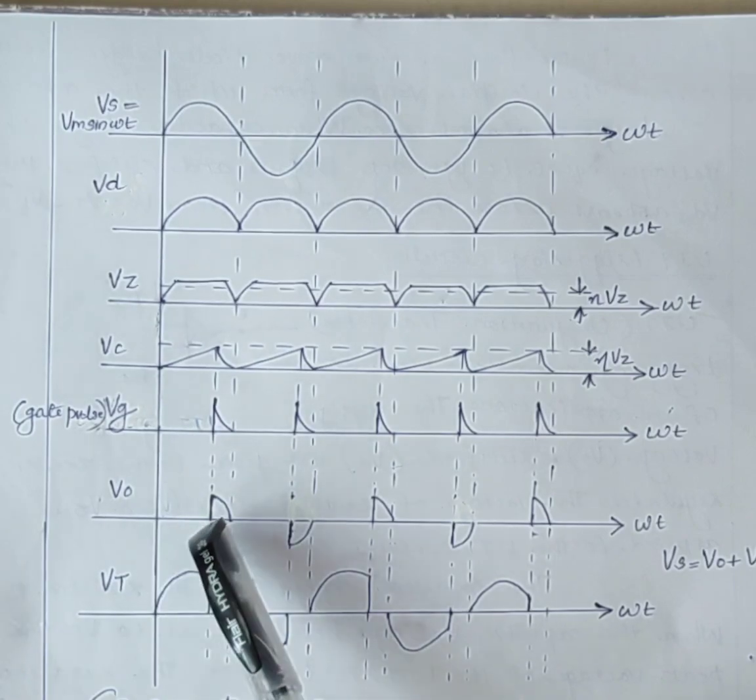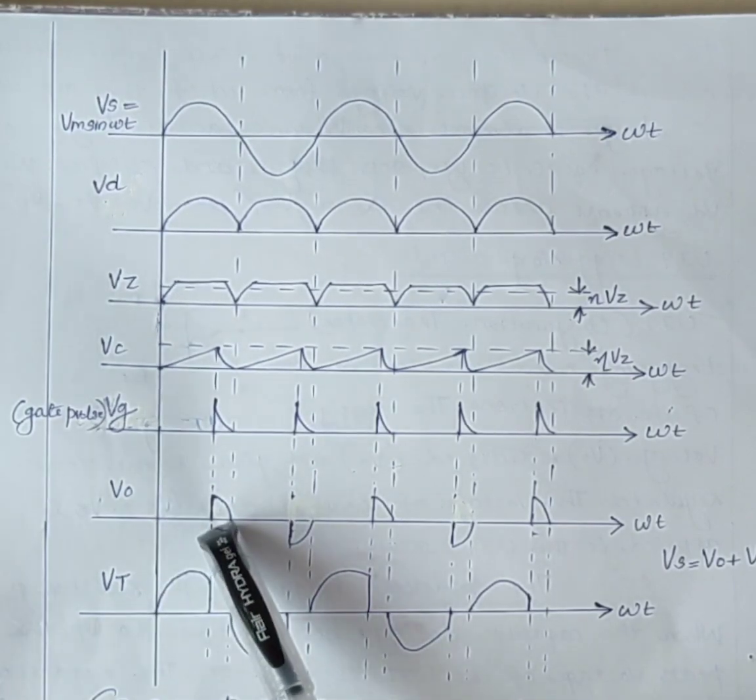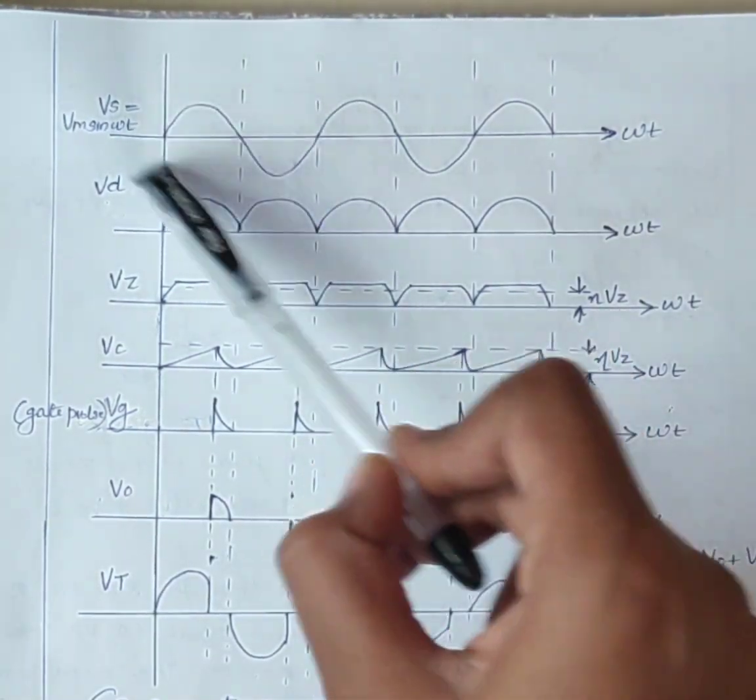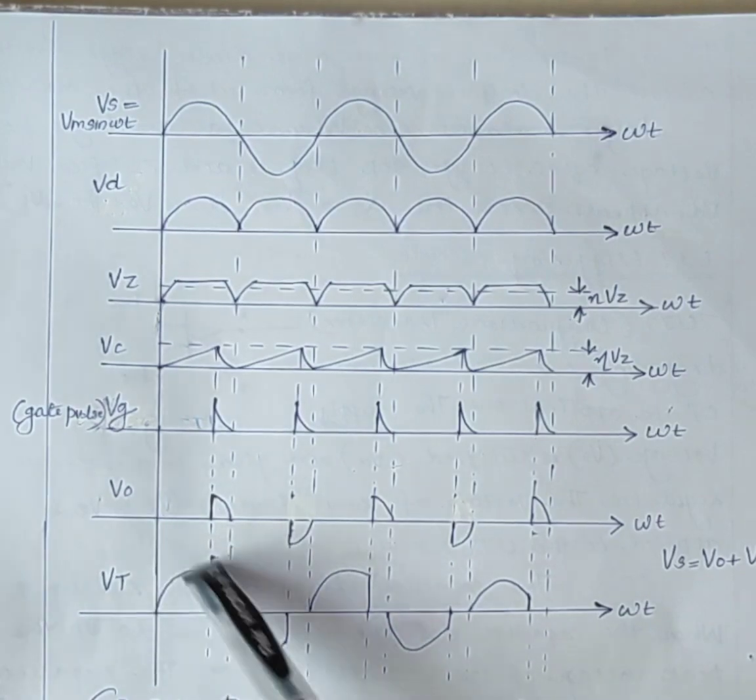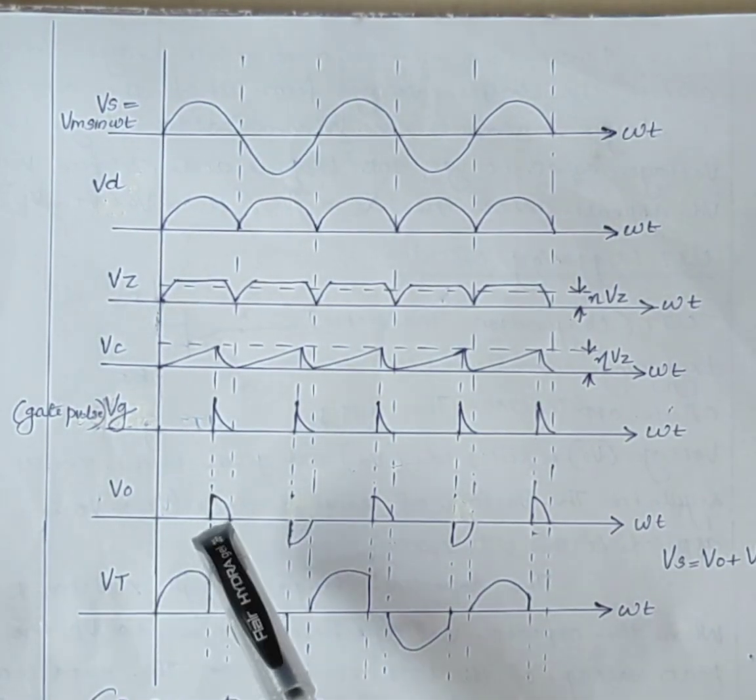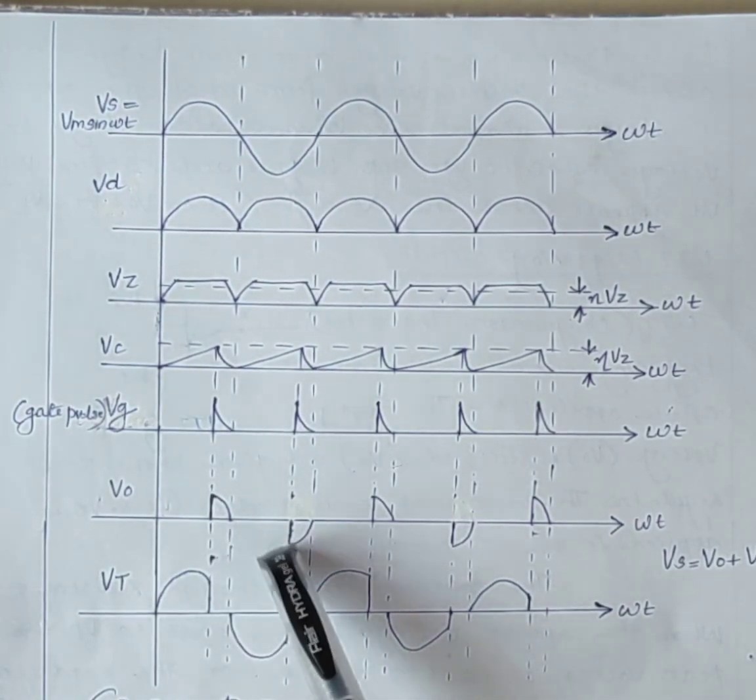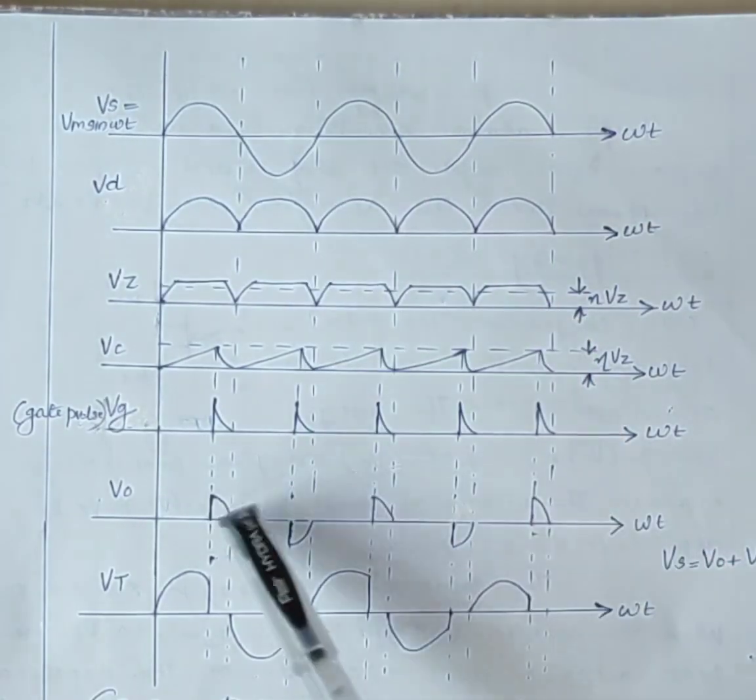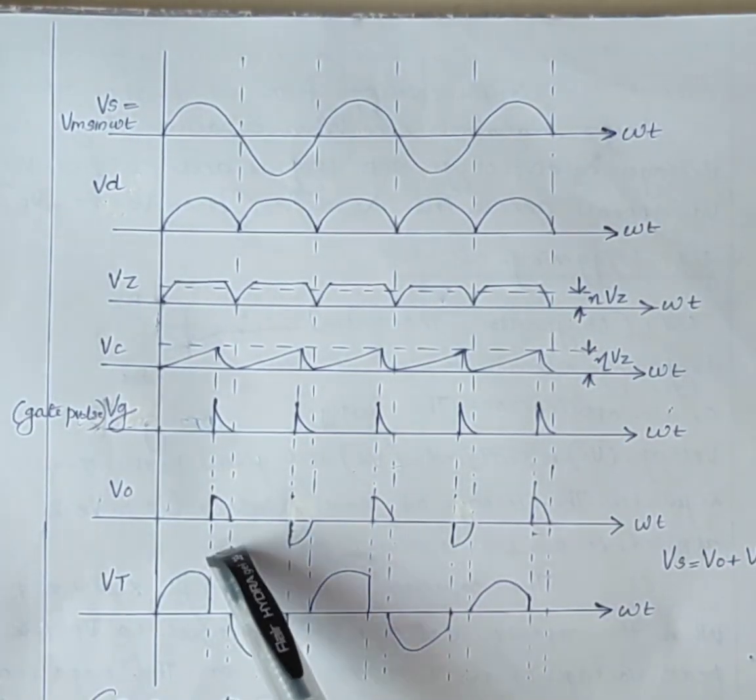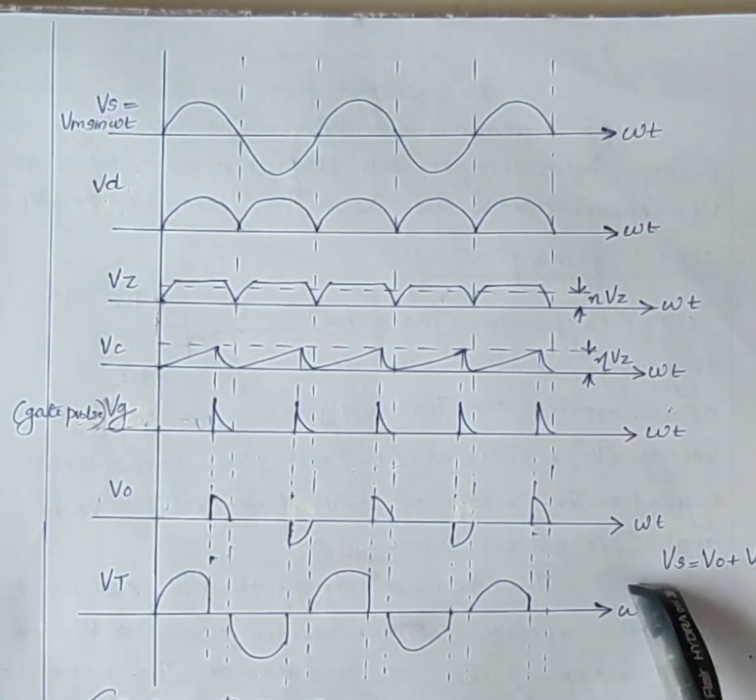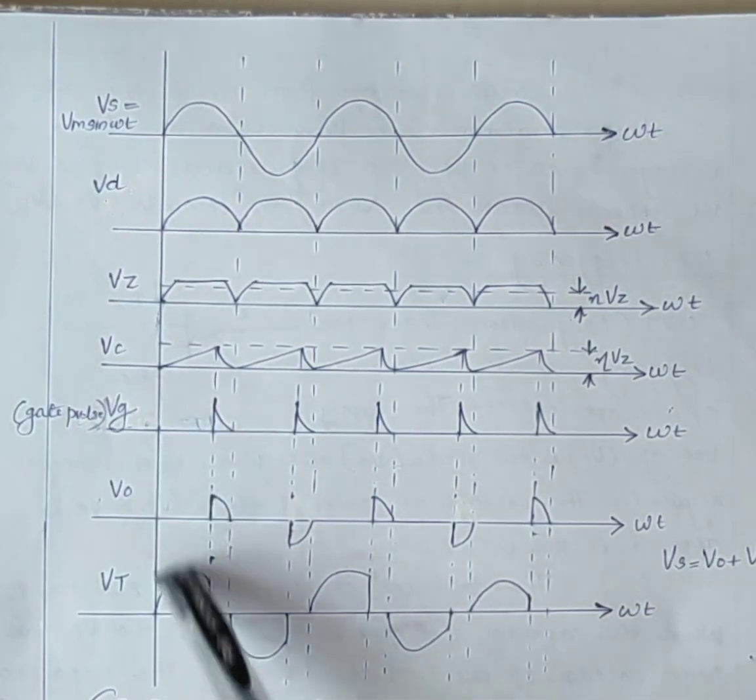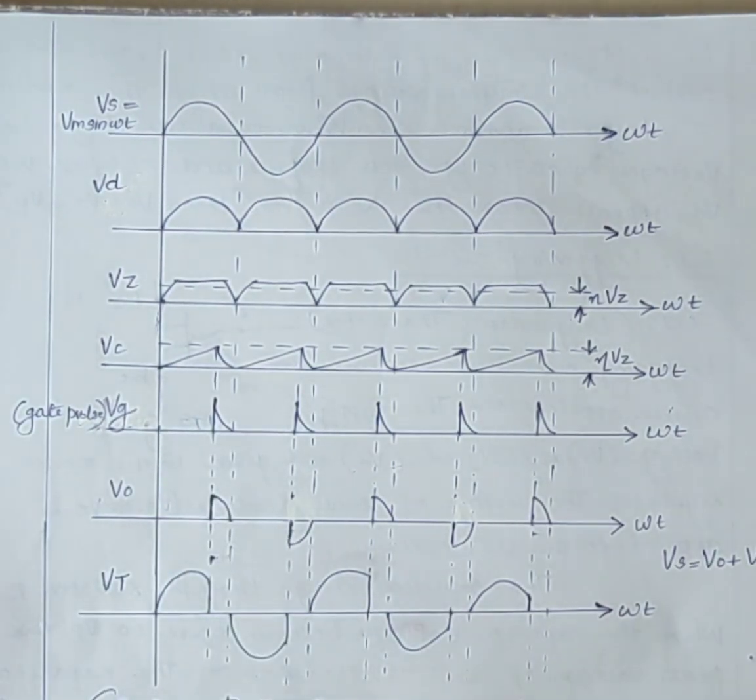Up to alpha, 0 to alpha, supply voltage appears across the SCR. Here, after when SCR is turned on, supply voltage appears across the load. Here, VAC is equal to V0 plus VT. Thank you.